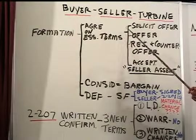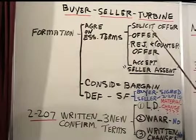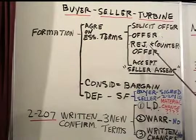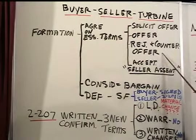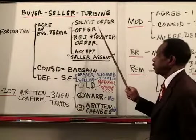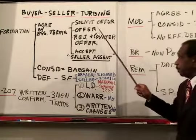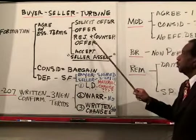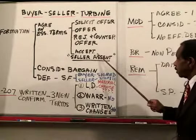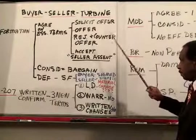You can establish agreement on the central terms through the offer and acceptance method. Here the buyer solicited an offer. Then seller made an offer — the price was not included, but UCC 2-305 says that's okay; you can make a valid offer without the price being there, agreeing to determine it in the future. The buyer rejected that offer by saying, 'I'll accept it only if you agree that the final price is not to exceed $400,000.' That's a counteroffer. Then the seller said, 'We assent to that,' which was the acceptance. So the parties agreed on the essential terms by the offer and acceptance method.